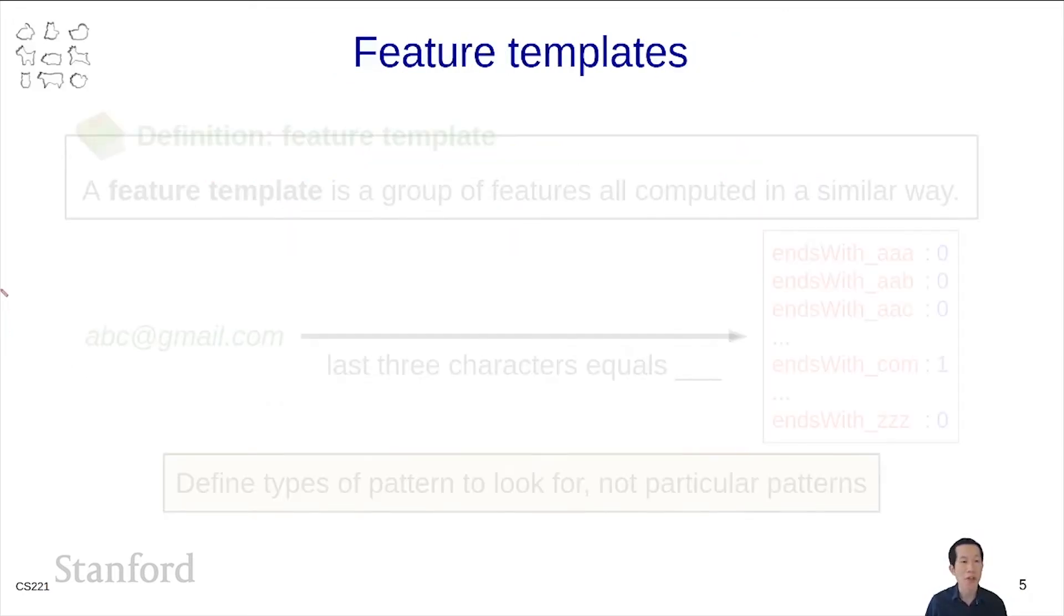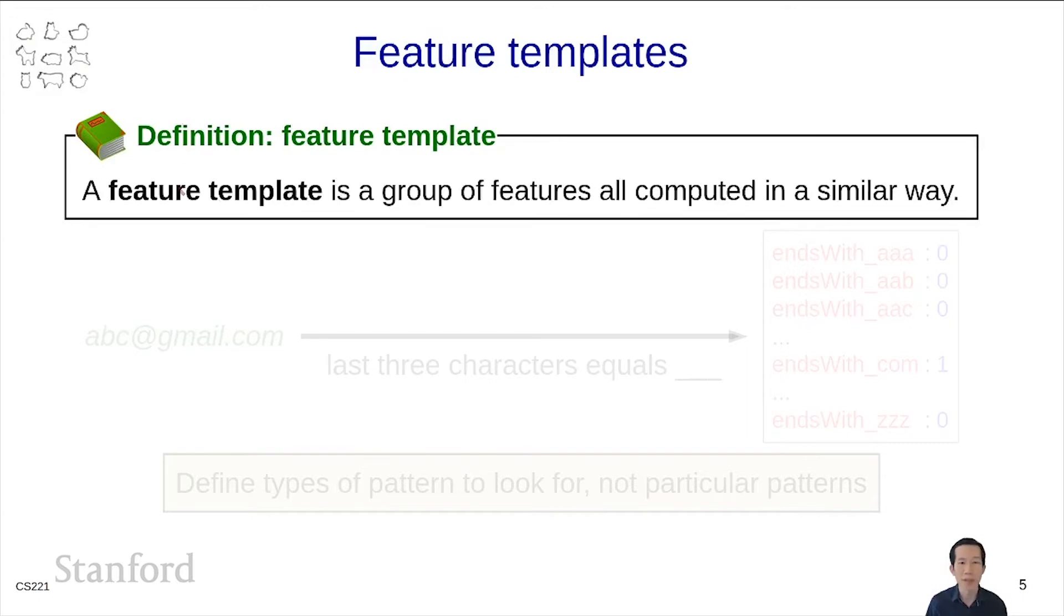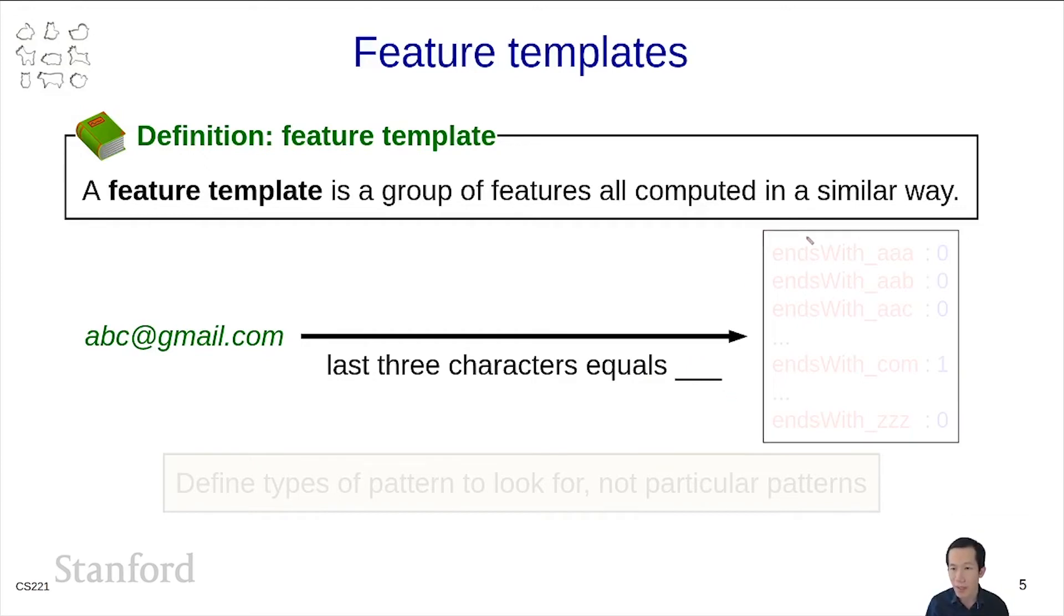This is where feature templates come in. A feature template is simply a group of features, all computed in a similar way. Here's an example. The input abc at gmail.com. We're going to write the feature template as simply an English description with a blank. And that blank is meant to be filled in with an arbitrary value. Last three characters equals something. By instantiating that blank with all sorts of different values, then we begin to realize the features that are actually defined by this feature template.